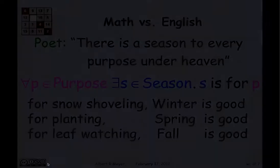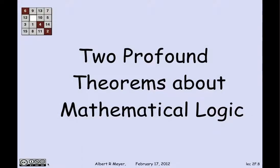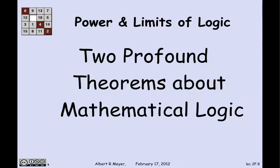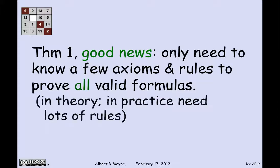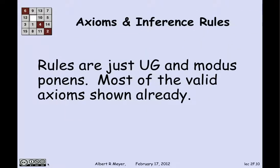Now we shift to another topic: two profound theorems from mathematical logic about the properties of predicate calculus, describing the power and limits of logic. These are called meta theorems, because they're theorems about theorems — theorems about systems for proving theorems. The word 'meta' means going up a level. The first theorem is a good news theorem: if you want to prove every valid assertion of predicate calculus, there are really only a few axioms and rules needed to do the job — namely modus ponens, universal generalization, and a few valid axioms we've already seen.